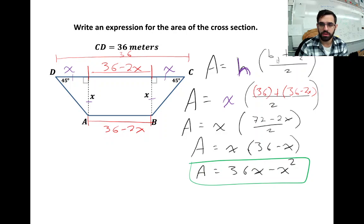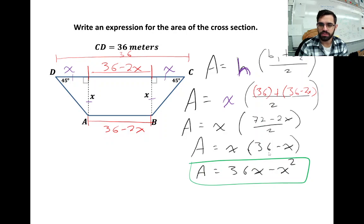The trapezoid area formula is height times (base₁ + base₂) / 2. I'm calling base₁ the top (36) and base₂ is AB at the bottom (36 - 2x). Adding those together and dividing by 2 gives 36 - x, which is the average width. Multiply by height x and you have the final solution.